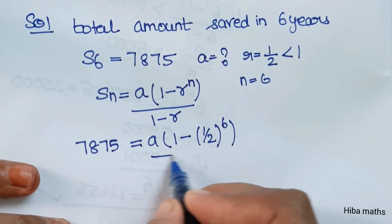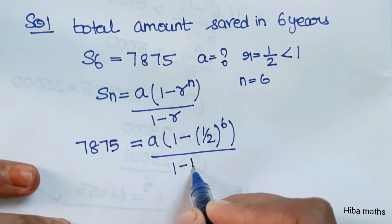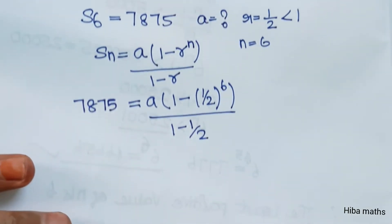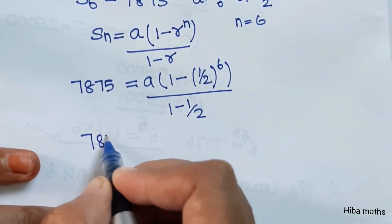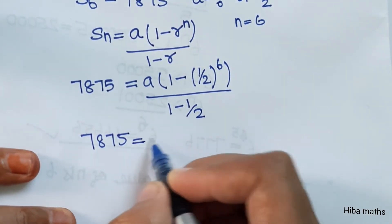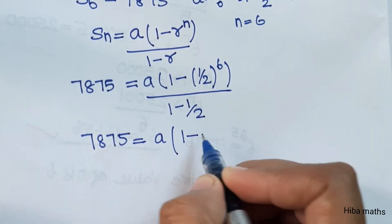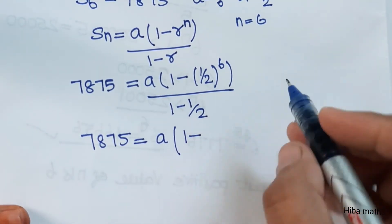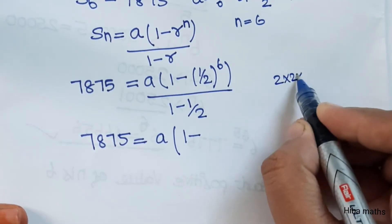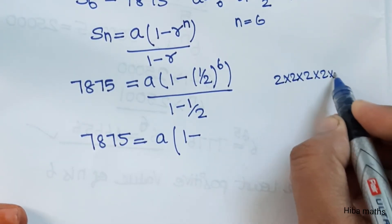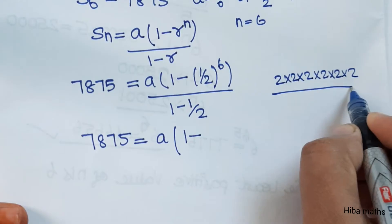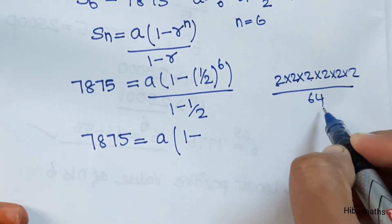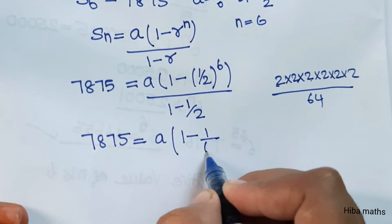With n = 6, we compute (1/2)^6. Since 2^6 = 2×2×2×2×2×2 = 64, we get (1/2)^6 = 1/64. So 1 - 1/64 remains in the numerator, and we divide by (1 - 1/2).